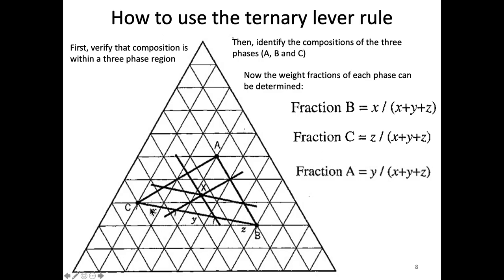Then I do the same thing for component B — the opposite of B is this fraction X, so fraction B equals X over the total. That leaves Y, which is opposite to A at the top, giving the fraction of A as Y over the total. The combination of those three fractions can be used to determine the fractions of these three phases. We used this bottom portion of the triangle here, but we could also use other portions of the triangle — the distances would be different, but we'd use the same methodology.